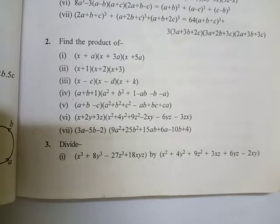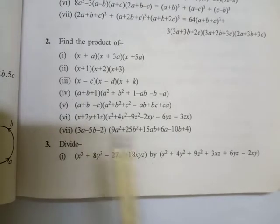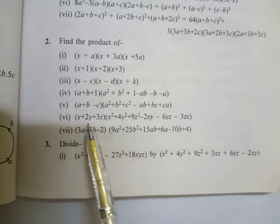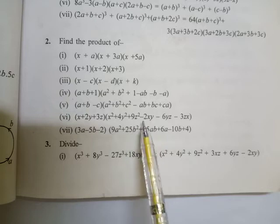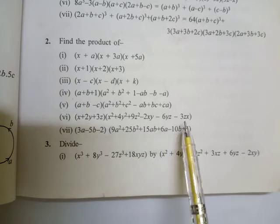Now students, look at the next question, number 2 roman 6: x + 2y + 3z, x² + 4y² + 9z² - 2x² - 6yz - 3zx. This is the question as you can see in the video.